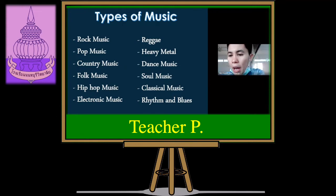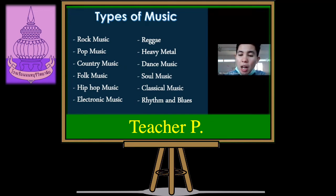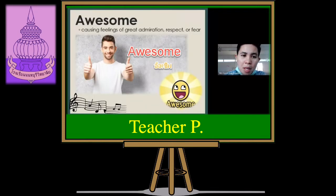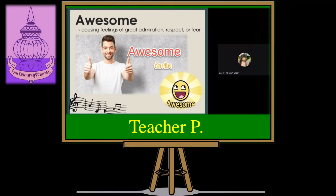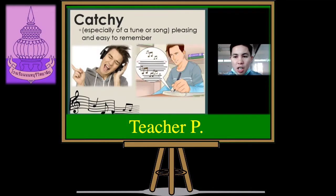Now let's learn some vocabulary from the dialogue — we will practice the dialogue later. Our first word is 'awesome.' Everyone repeat after me: awesome. How does it spell? A-W-E-S-O-M-E. Awesome.